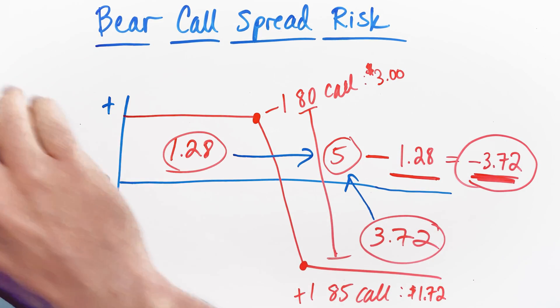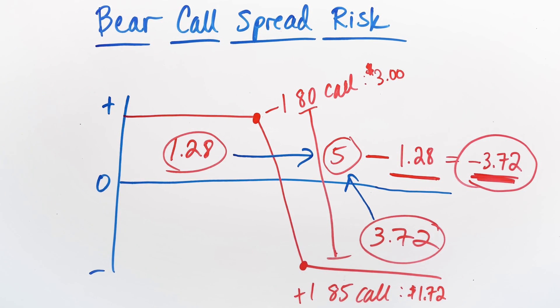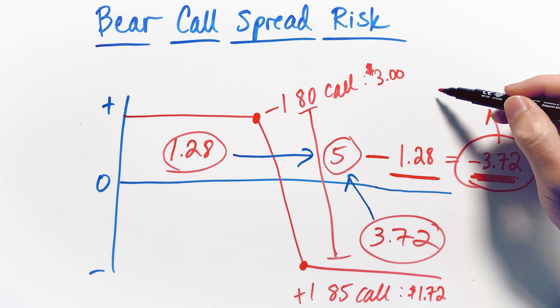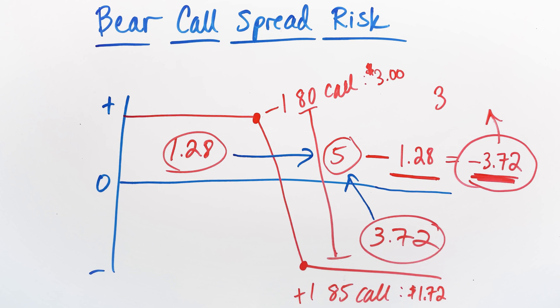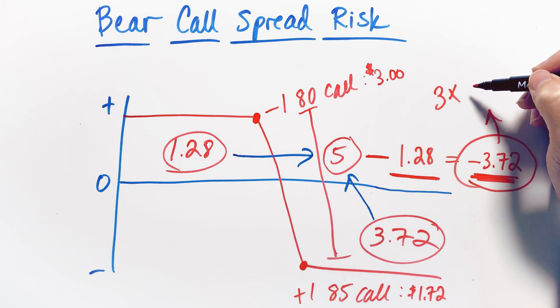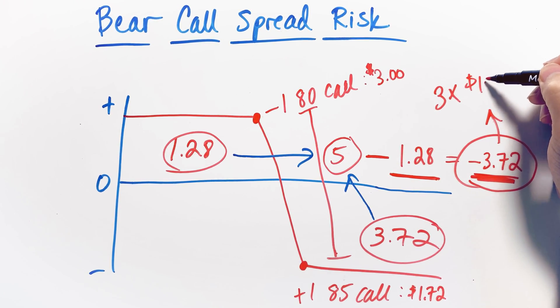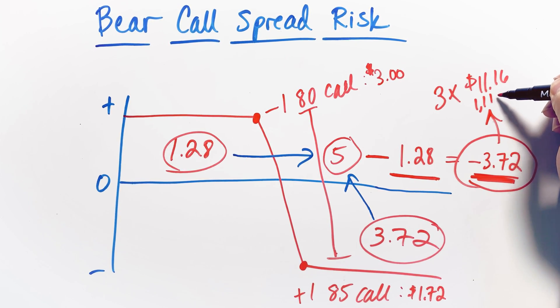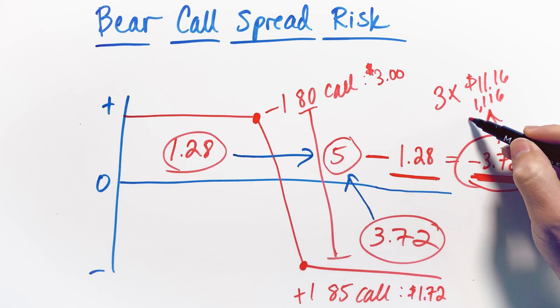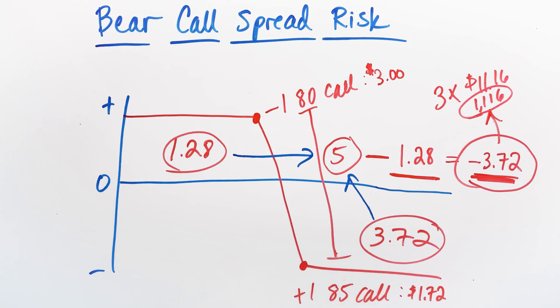Another thing that you should do is you should always then multiply this amount by the number of contracts that you're trading. So in this case, this is just one particular spread, but let's say that you were trading three spreads in your account. You were selling three of the 80 strike calls and then buying three of the 85 strike calls. You would then multiply this by three contracts, and that would give you total risk of $1,116. So that is the total risk for three contracts if you were trading.